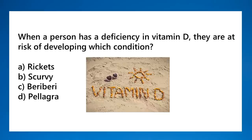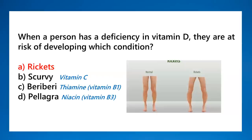When a person has a deficiency in vitamin D, they are at risk of developing rickets — a condition causing bowed legs. Our body can synthesize vitamin D using sunlight. Vitamin C deficiency causes scurvy. Vitamin B1 (thiamine) deficiency causes beriberi. Vitamin B3 (niacin) deficiency can lead to pellagra. These are the conditions that develop from deficiencies in these vitamins.